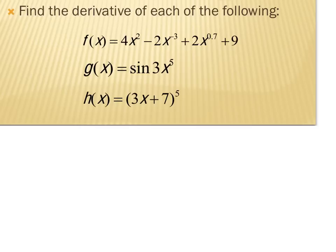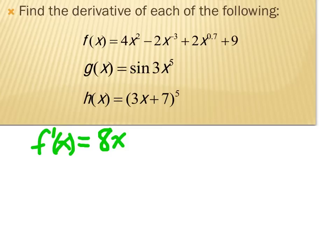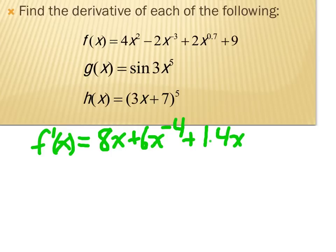The first problem is to find the derivative of f of x — f prime of x. This requires using the power rule several times for each term separately. For 4x squared: 4 times 2 is 8x. For the second term: negative 2 times negative 3 is positive 6x to the negative 4. For the third term: multiply the exponent times the coefficient to get 1.4x to the negative 0.3 power. The constant 9 is x to the 0, so its derivative is 0.